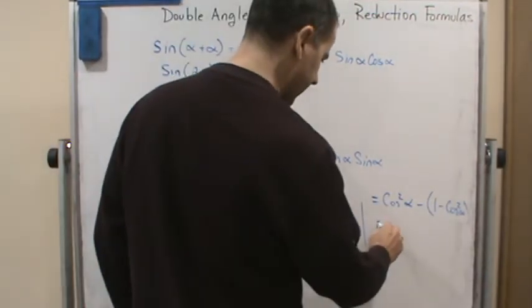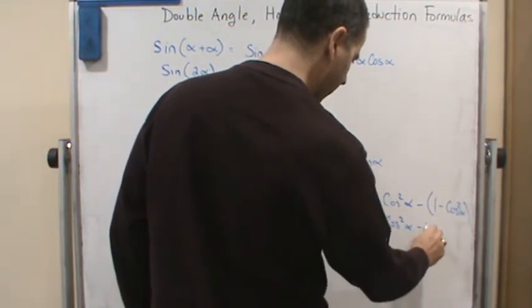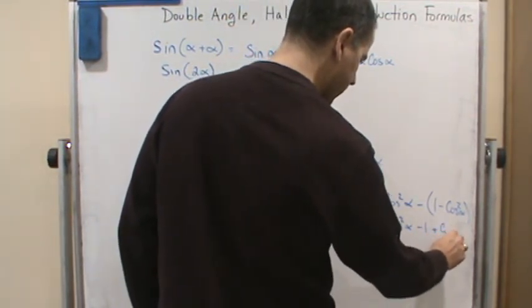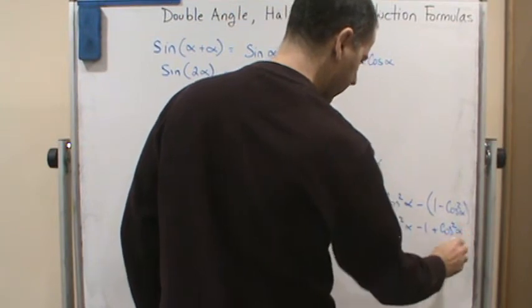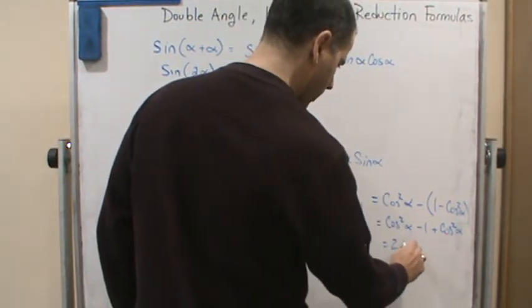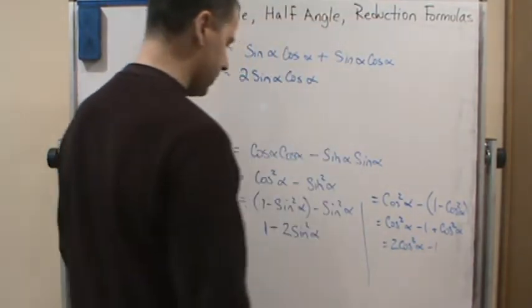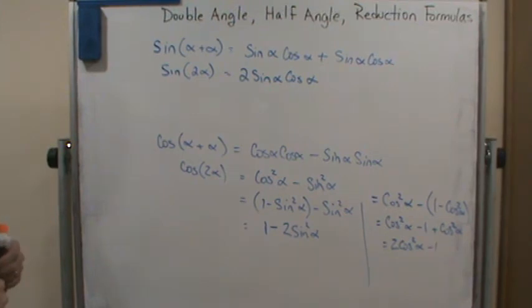And then now, if I simplify this, I get cosine squared alpha minus 1 plus cosine squared alpha. And then I get what? 2 cosine squared alpha minus 1. And so that's the other variation of the double angle formula for cosine.